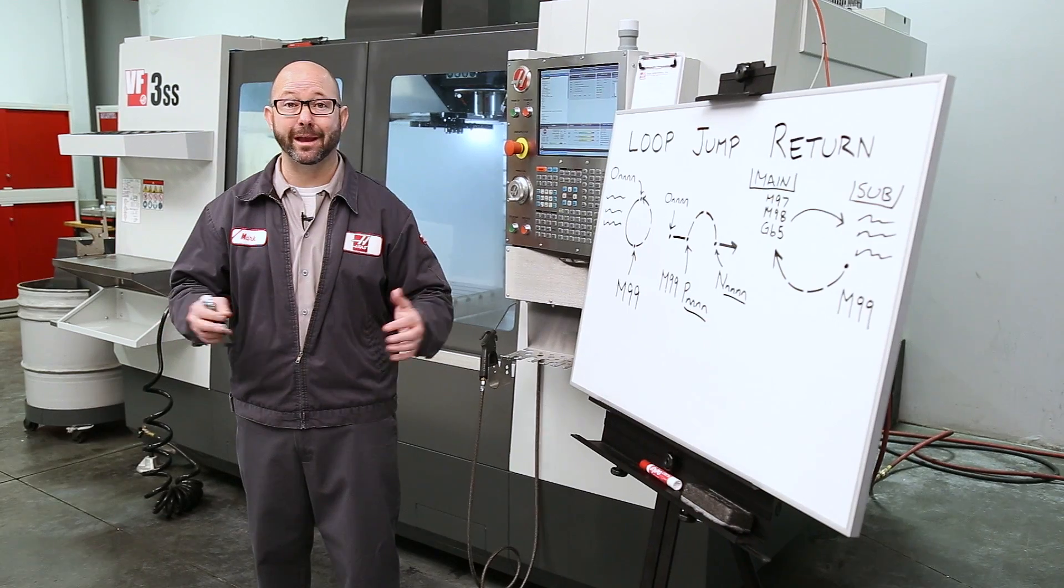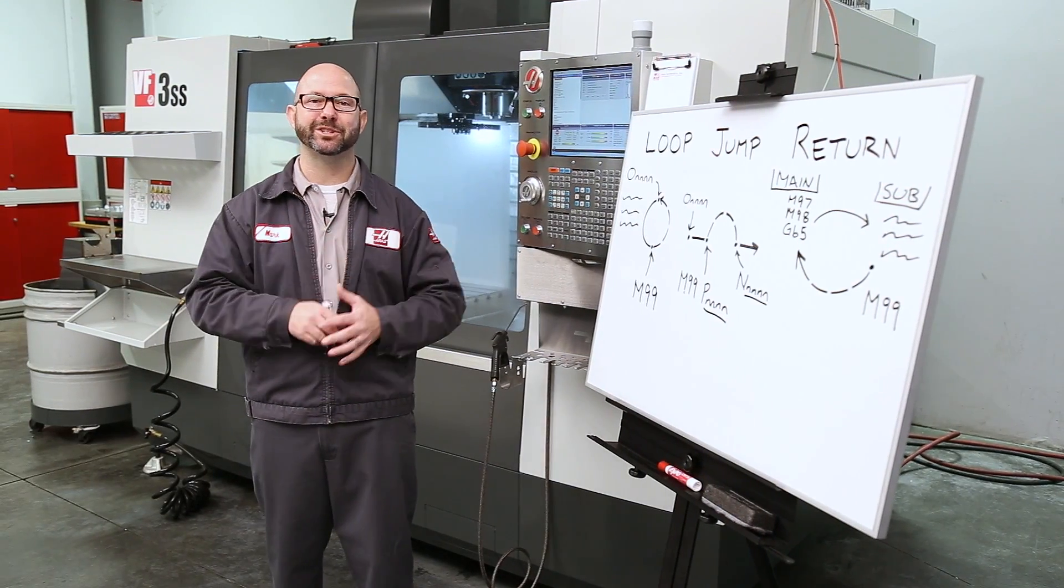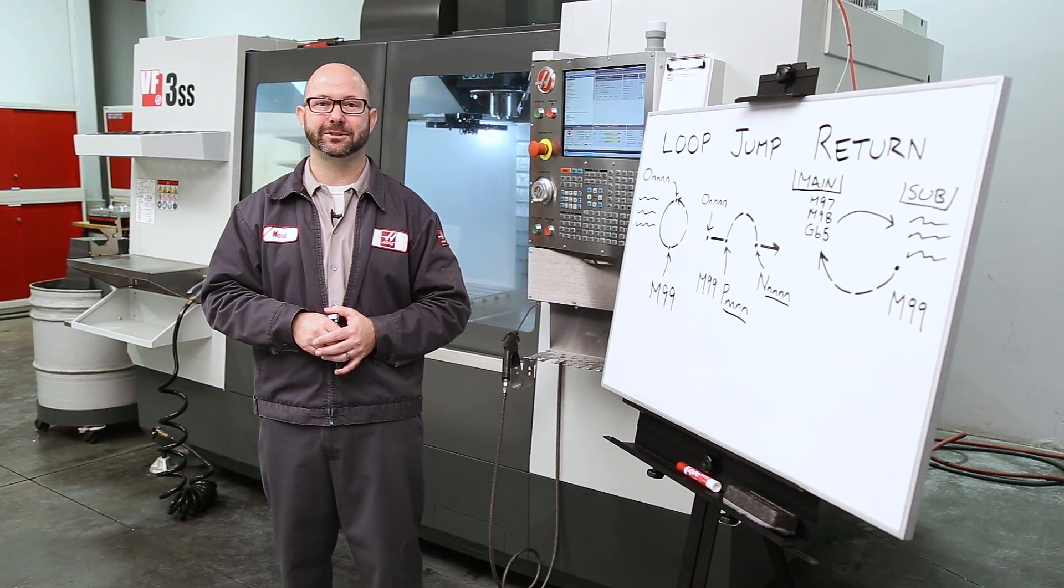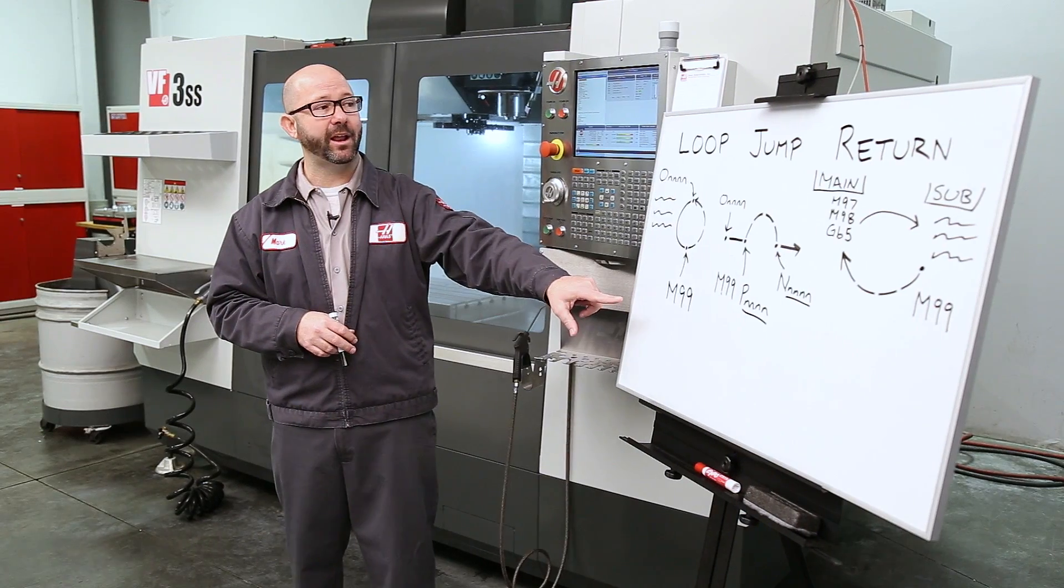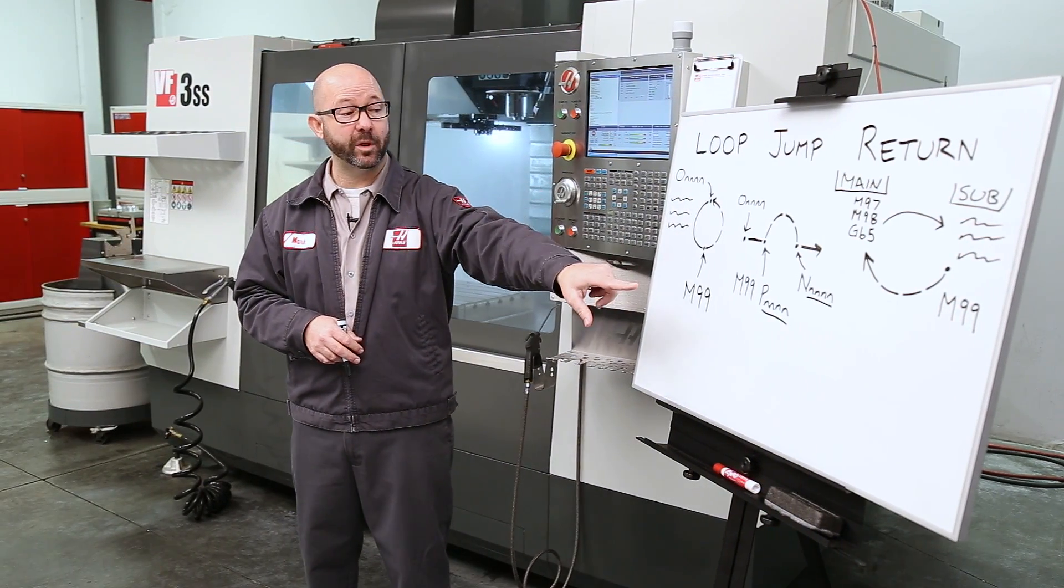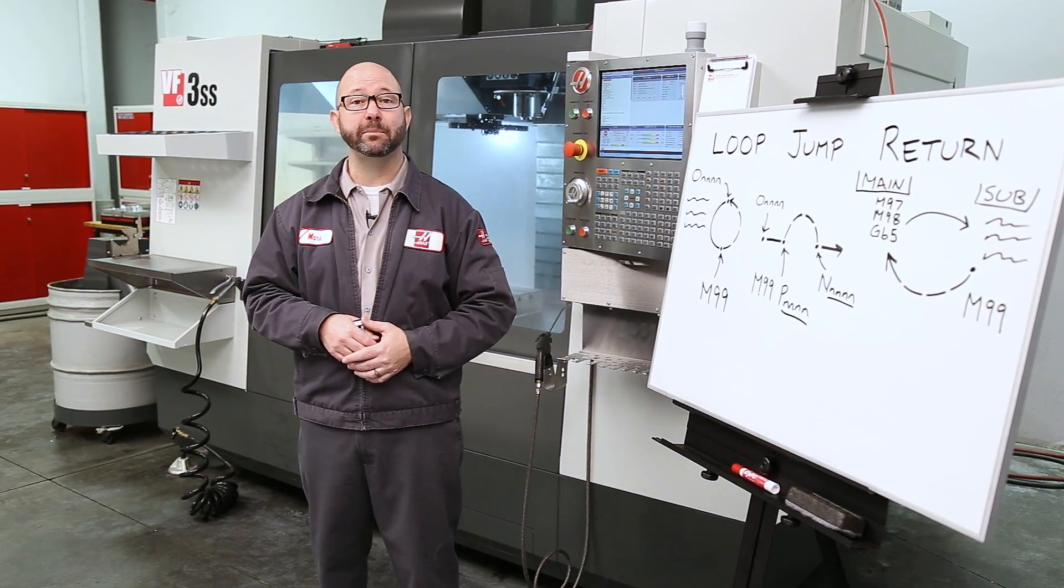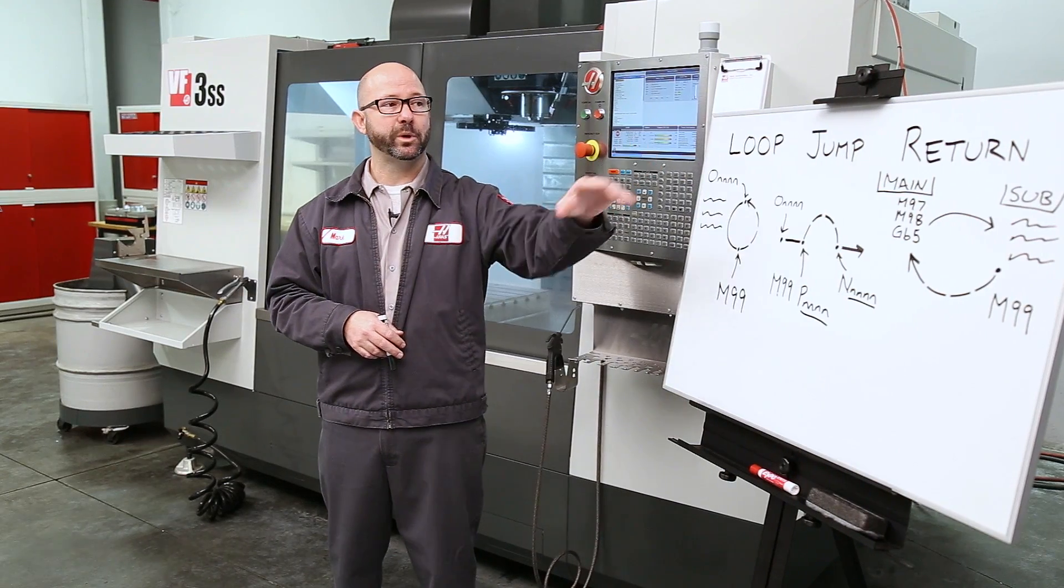Well, that's just about it for our M99. Now, we're all set for those subprogram and macro videos. But remember, M99 loops, M99 with a P number jumps, and an M99 in a subprogram returns us back to the main. Well, thanks for letting all of us here at Haas be a part of your success, and we'll see you on the next Haas Tip of the Day.